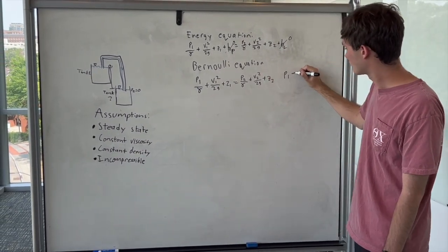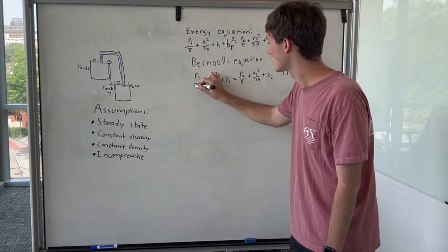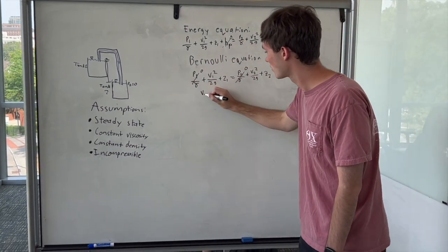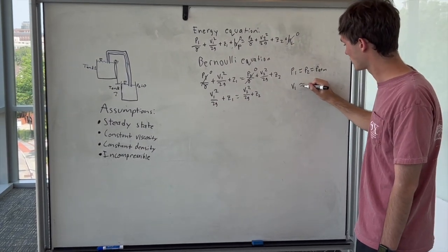We apply the idea that the pressure at 1 and pressure at 2, which is the top of both tanks, is the same as atmospheric pressure, so those cancel out, giving us an equation with just velocities and heights. We then apply the reservoir assumption,